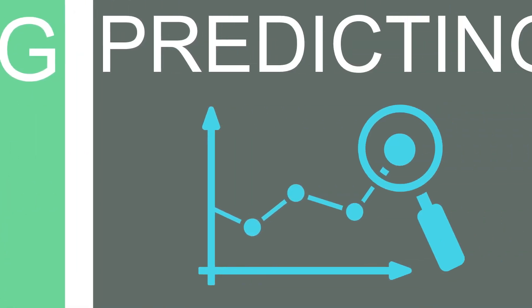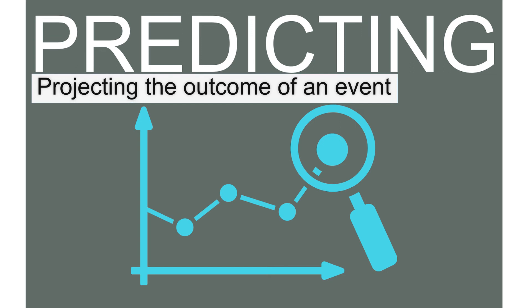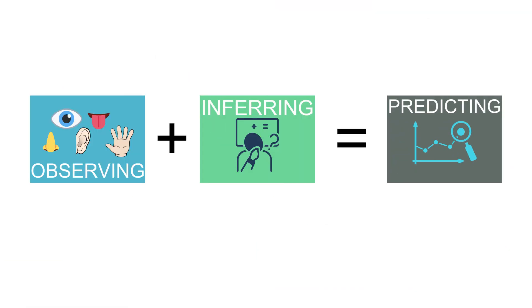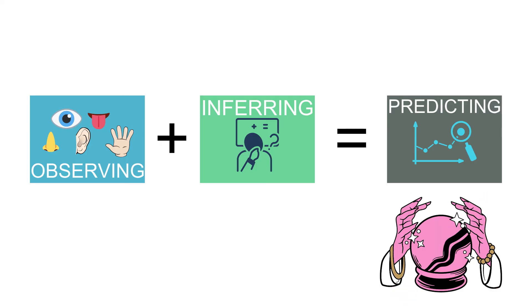Lastly, predicting is a skill defined as projecting about the outcome of an event. Good observations and good inferences may lead to sound predictions. Because predictions are based on observations and inferences, it is important to note that predictions are not simple guesses and are thus testable.